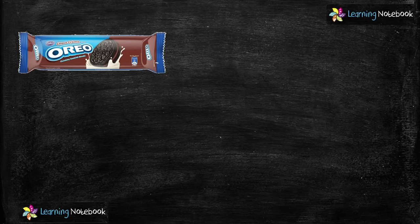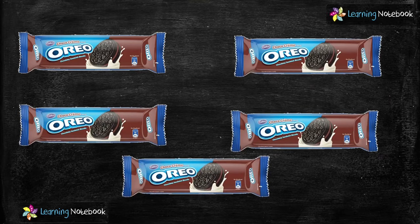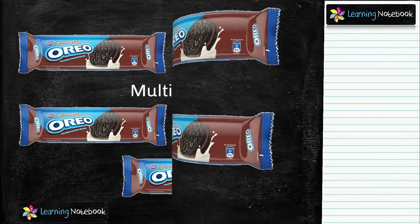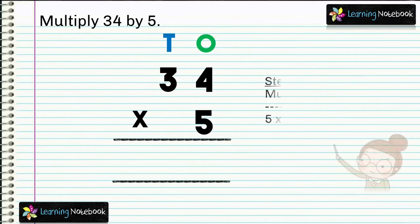Let's see the next example. If a packet of biscuits contains 34 biscuits, how many biscuits will five such packets contain? This is again a case of multiplication — here we will multiply 34 by 5. To multiply, let's write the numbers in columns.